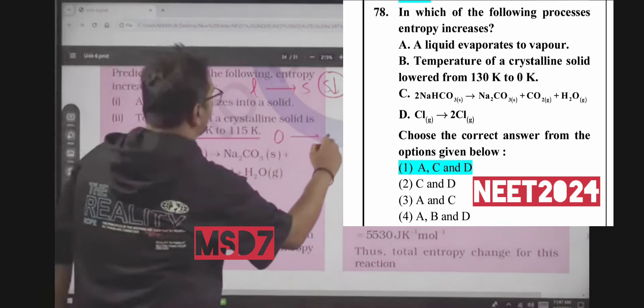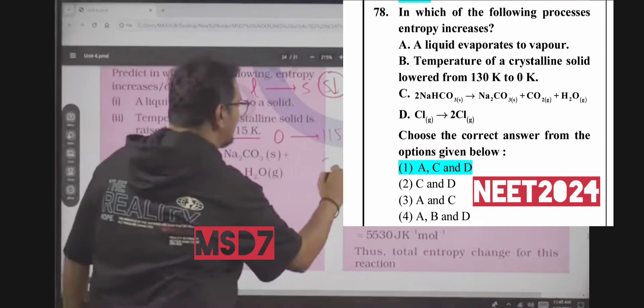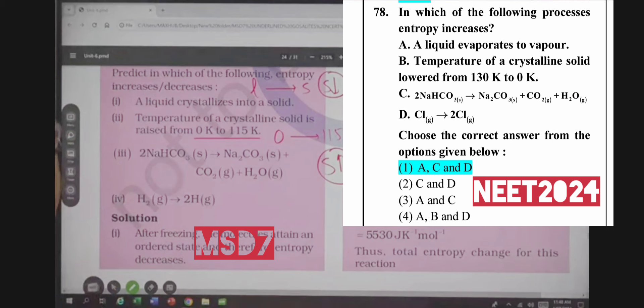Temperature changes from 0 to 115 Kelvin, more temperature, more random motion, more entropy, more chaos, more randomness.